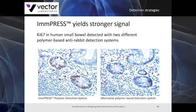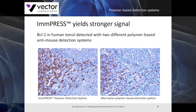The Impress polymer reagent system yields a stronger signal. Ki67 is clearly demonstrated with the Impress polymer system compared to an alternative polymer-based system. Another example is BCL2 in human tonsil, where the Impress signal shows a significant improvement over the competitor's product.